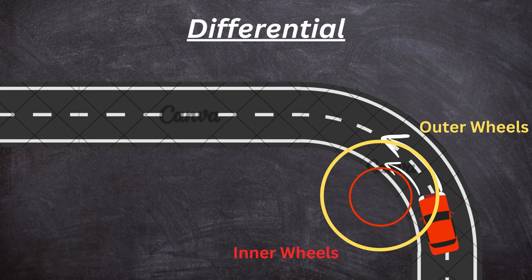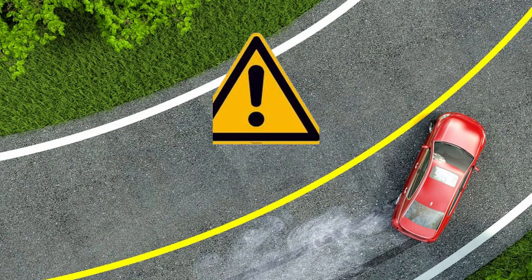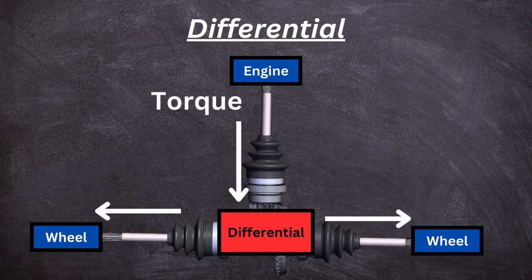Therefore the outer wheels need more speed. If you just have regular standard axles, the car is going to slip in order to complete the turn, and that's not exactly safe. So we have these things called differentials — they split the torque received from the transmission 90 degrees into each axle of a given driving wheel.